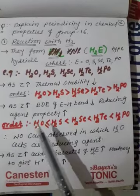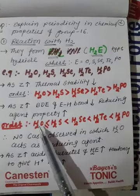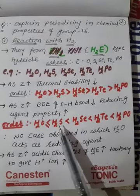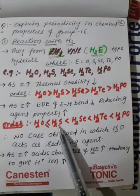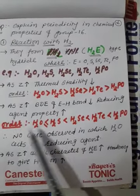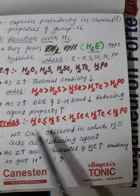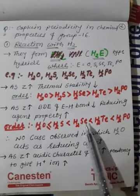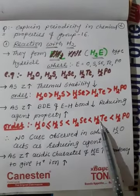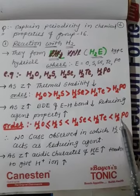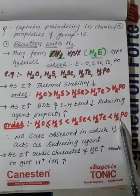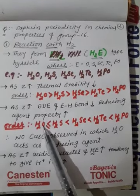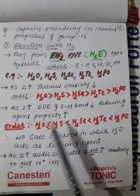The order of reducing agent property is: H2O < H2S < H2Se < H2Te < H2Po. So H2O is the weakest reducing agent and H2Po is the strongest reducing agent.